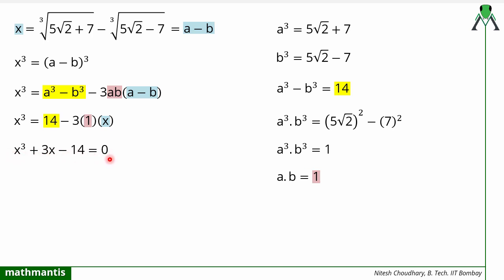Now we can solve this cubic polynomial. What we do is take the constant term 14 and the coefficient of x³ which is 1, multiply them to get 14, and then check its factors as possible values of x. The possible factors are 1, 2, 7, and 14.